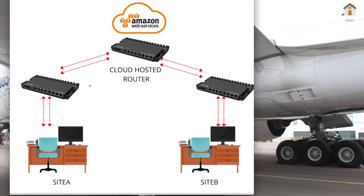To set up the connection and communicate, the MikroTik router on site A would connect out to the cloud hosted router, and then the cloud hosted router would connect out to site B's router. Such a setup might be useful in a situation where you can't get an internet connection with a static public IP address, or you're using a temporary internet connection. You can use a setup like this to set up a site-to-site VPN.